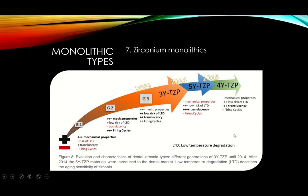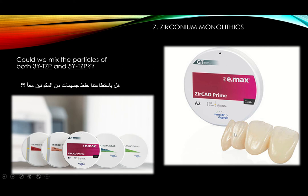A question arises: could we mix particles of both 3-yttria and 5-yttria zirconia in one block? The block contains many oxides — aluminum oxide, yttrium oxide, hafnium oxide, coloring oxides, and zirconium oxide. Of the zirconium oxide content, could we use a mix of 5-yttria and 3-yttria rather than one uniform form of yttrium oxide? Could there be different shapes and forms of the yttrium oxide within the same block?